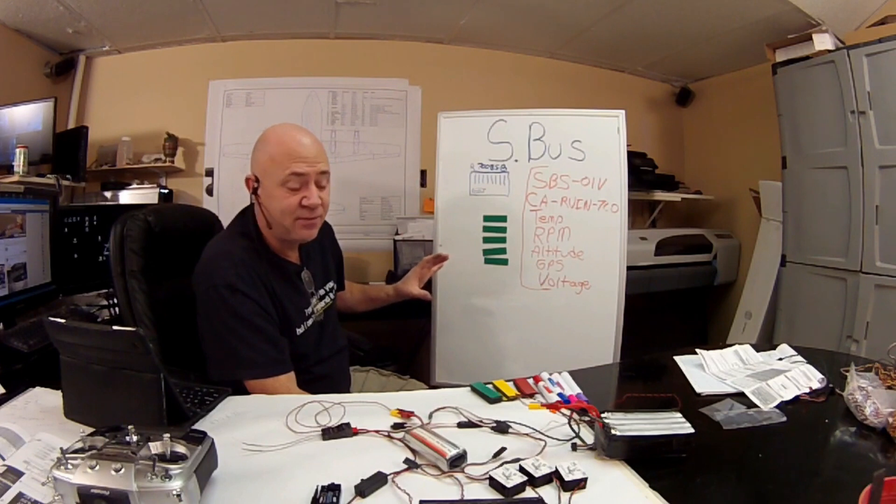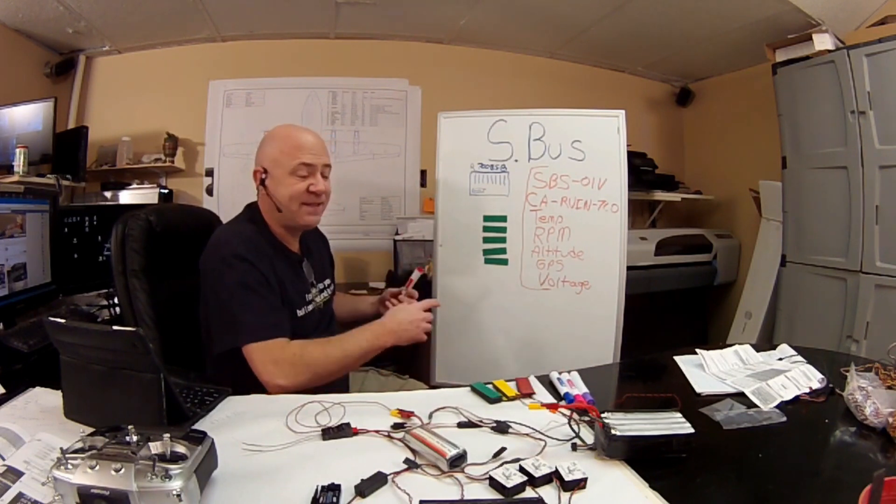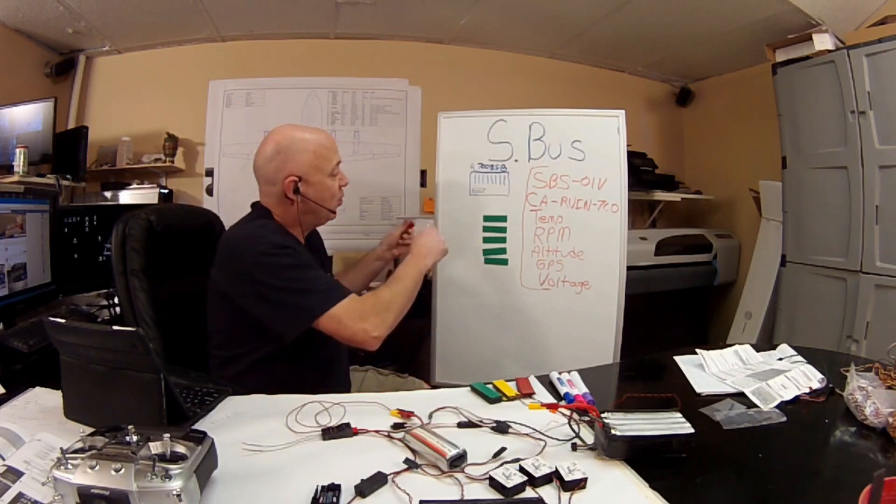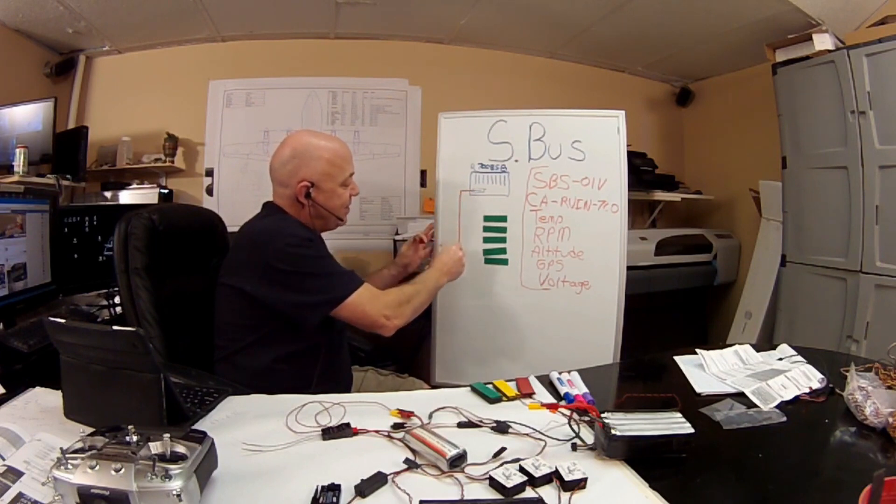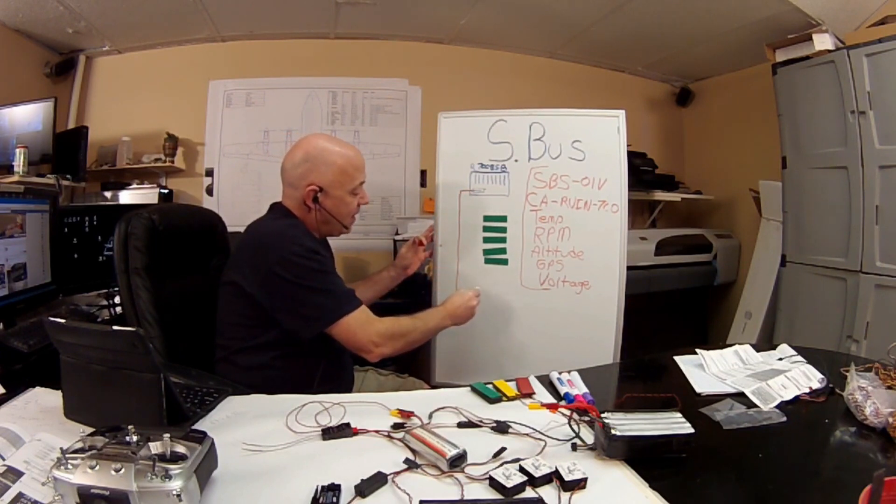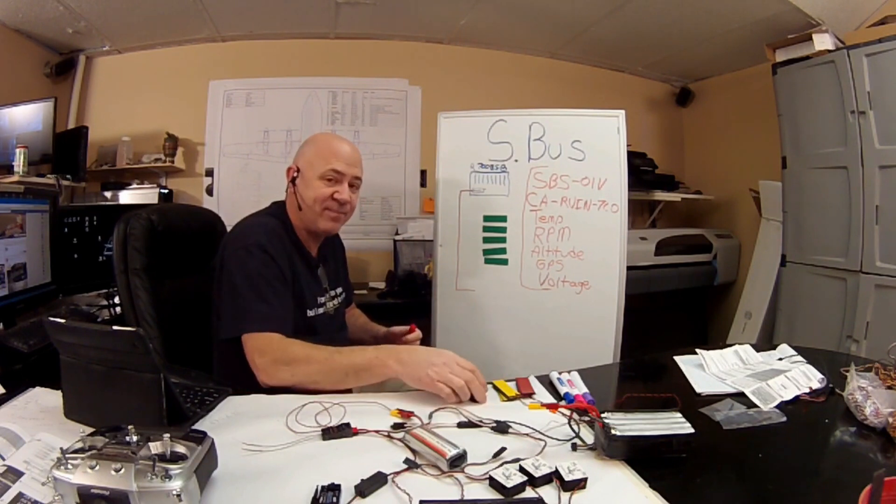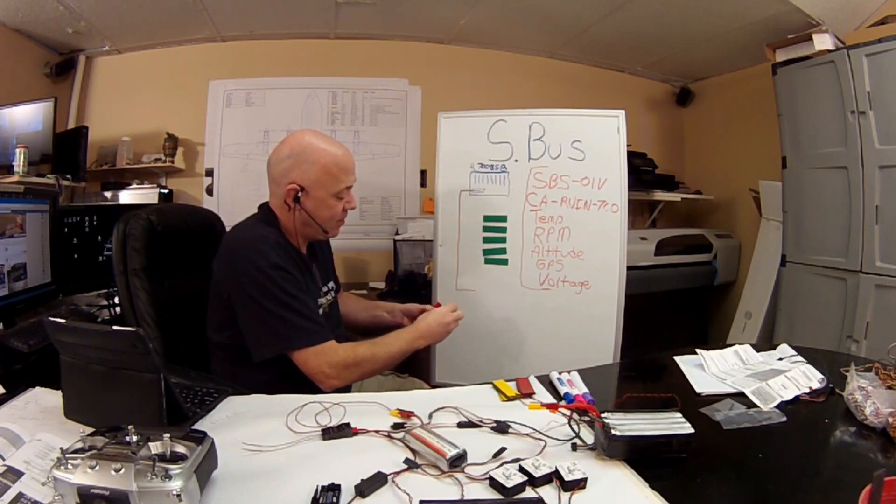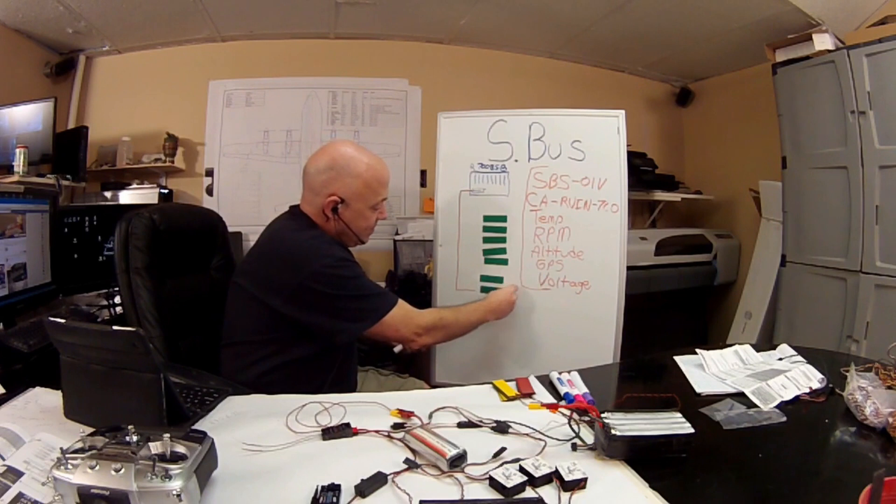So now let's say that you had more servos like I do on the C-130. So what I'm doing on the C-130 is I'm coming out of the SBUS and coming down here. And if I want to, I already own a whole bunch of standard servos, not SBUS servos but standard servos. So now let's say down here I have a couple more servos.